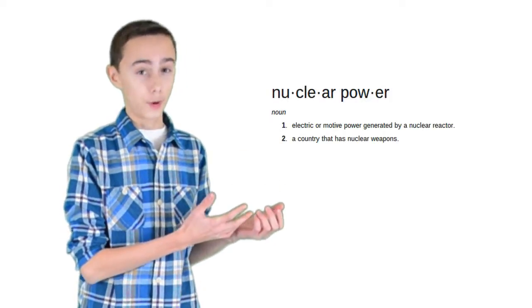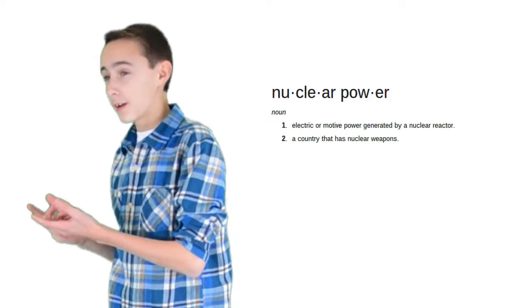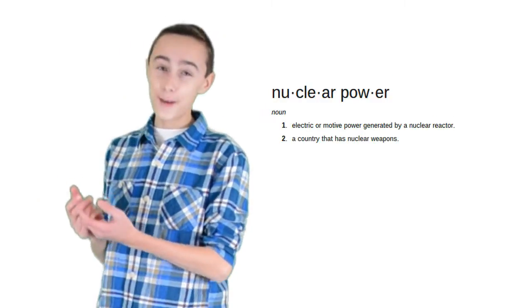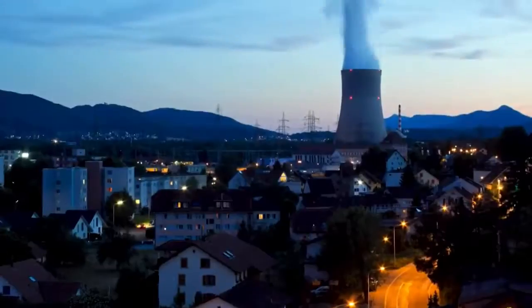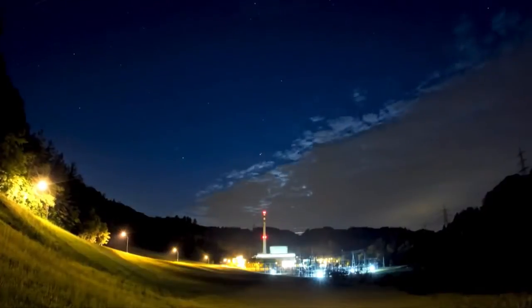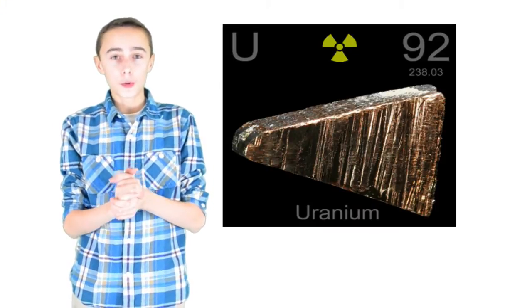Nuclear power can be defined in two ways: one, electricity as it's generated from a nuclear reactor, or two, a country that has nuclear weapons. As we said before, nuclear energy is nuclear power generated by a nuclear reactor. Nuclear power is used for electricity. Uranium, the fuel that nuclear power plants use, is a non-renewable energy source.